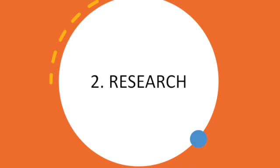Then the research. MIT App Inventor AI, which includes Personal Image Classifier using CNN, and VQGAN — Vector Quantized Generative Adversarial Network — is an algorithm which can generate images using a string of words or improve an inputted image.